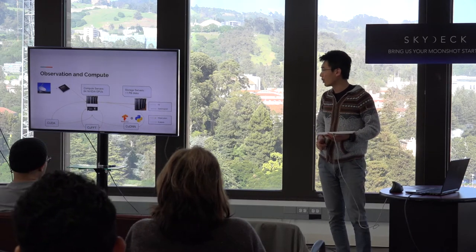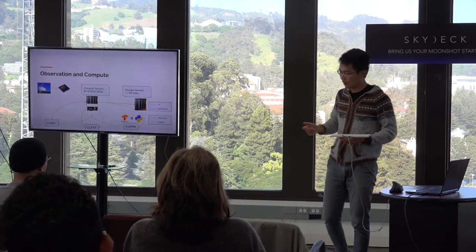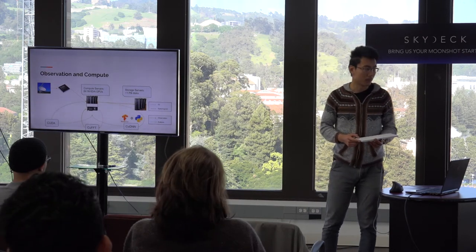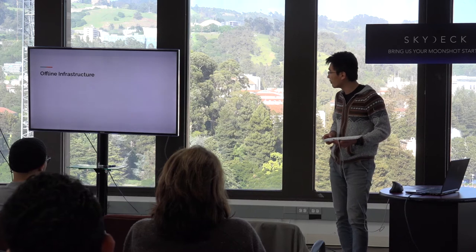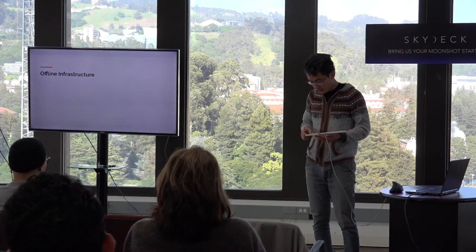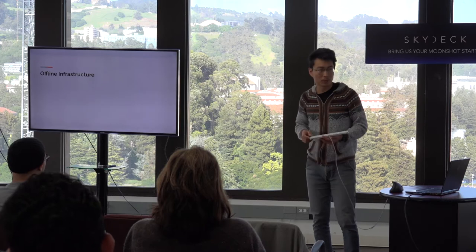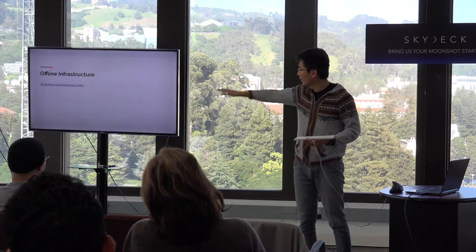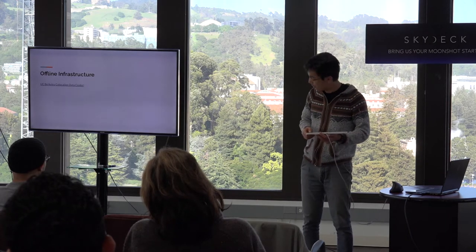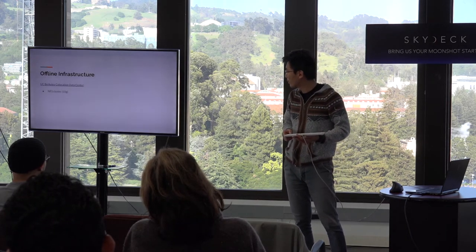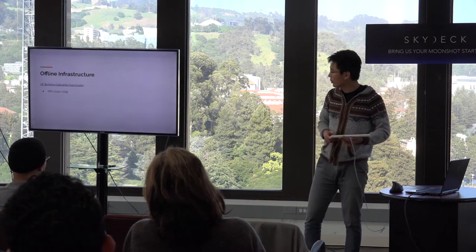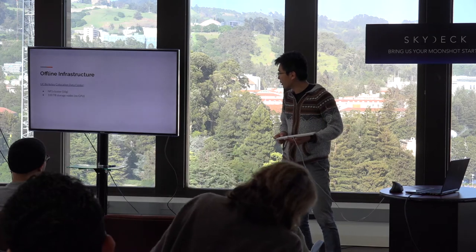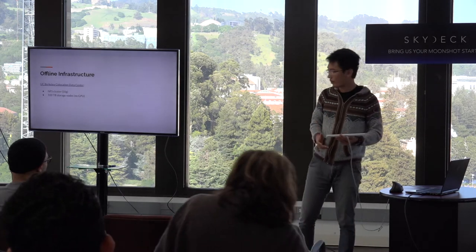The work I do is essentially offline processing — data gets pulled back into the compute servers from the storage node for processing. In the past couple of years, we've also developed an offline infrastructure at Berkeley, using the UC Berkeley Publication Data Center. We built our own node there and used additional NFS. We essentially have separate storage nodes and compute nodes.